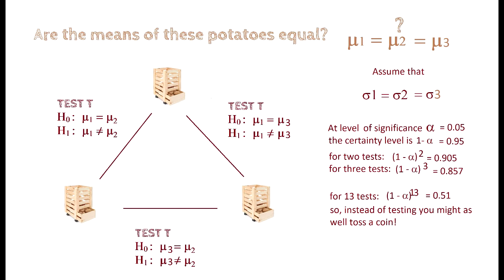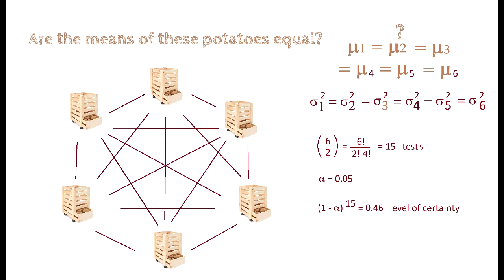When does it happen? You can say 13 is a big number. No, it is not a big number. It's enough to have just six kinds of potatoes. Then, by performing pairwise testing, the level of certainty is becoming 0.46. Why? Because we have to take six choose two tests, which amounts at 15. So practically, calculating pairwise, you obtain just a level of certainty less than a half. Tossing a coin would be more certain in this case.